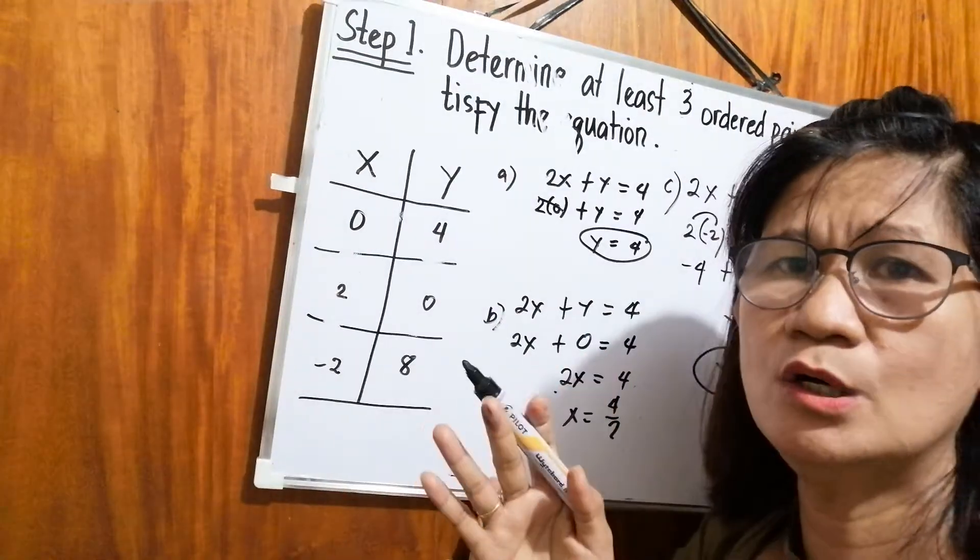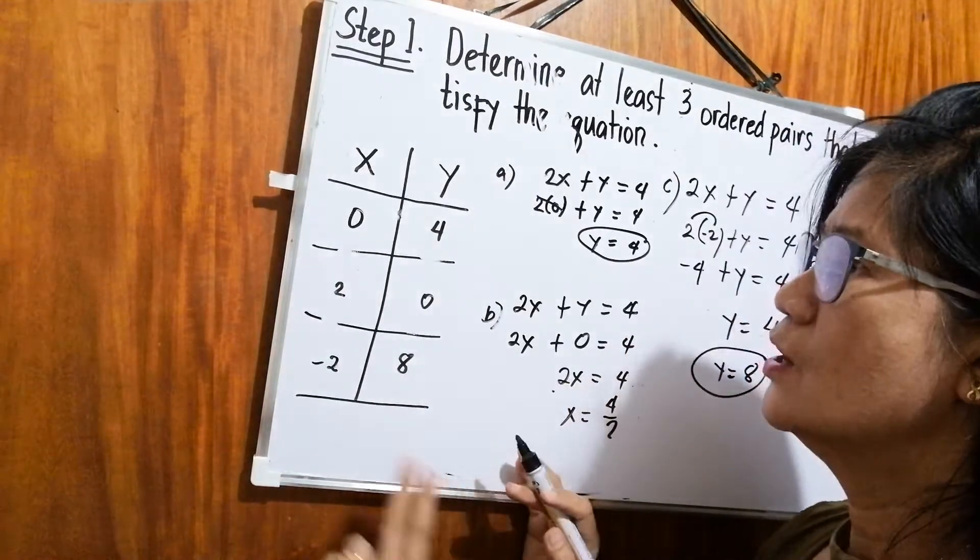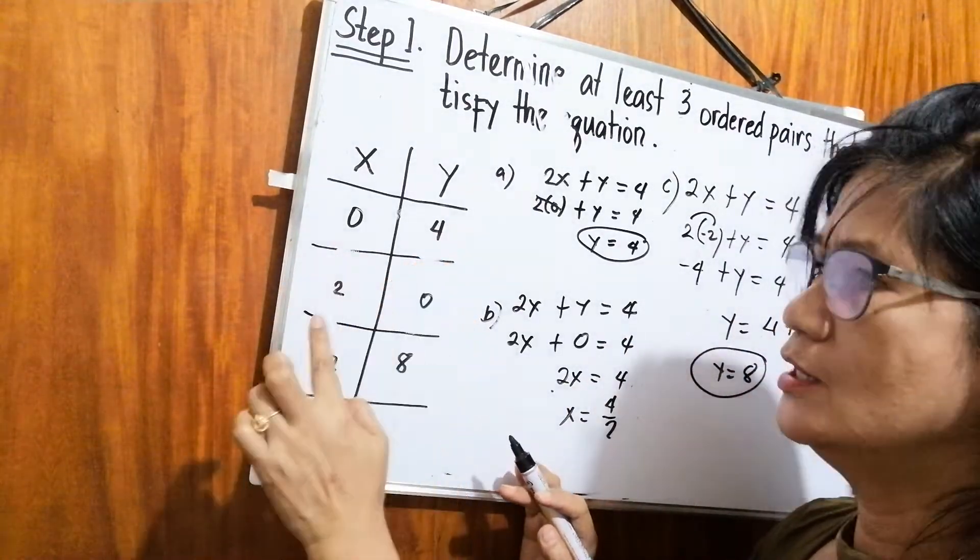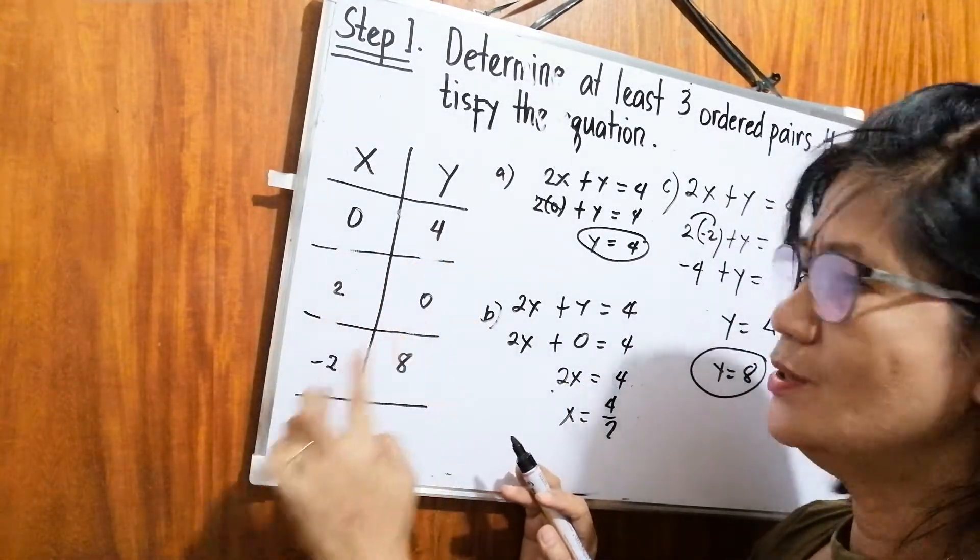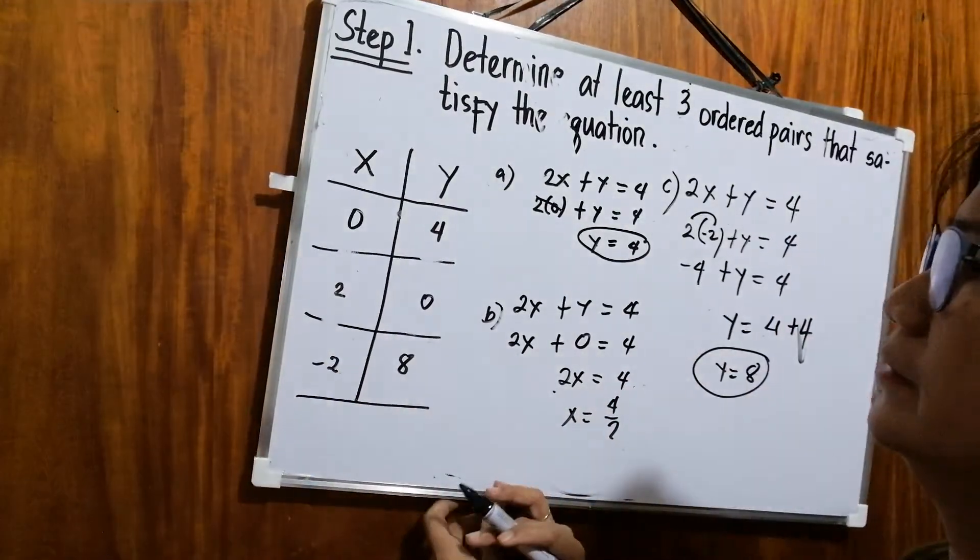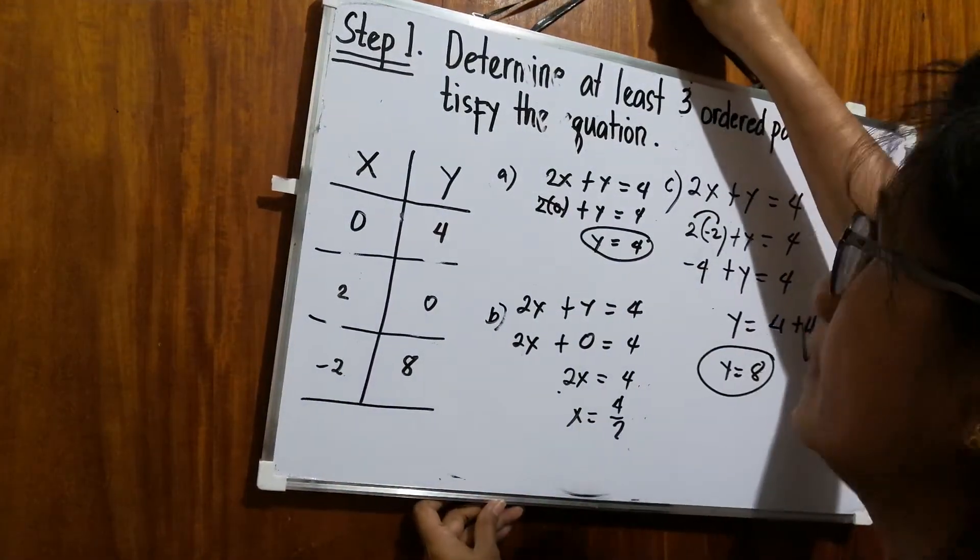So these are the ordered pairs. We created three ordered pairs. We have 0, 4, then 2, 0, and negative 2, 8. Then let's proceed to step 2.